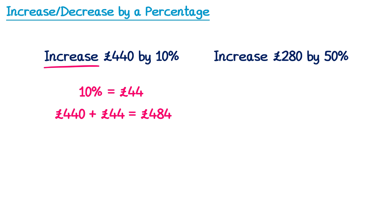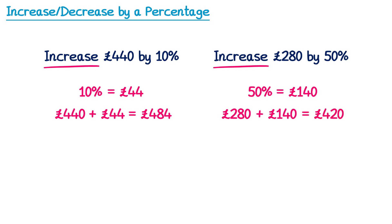Let's try a second example. Increase £280 by 50%. Our first job is to find 50%. We know we can find 50% of something by dividing it by 2, so 280 divided by 2 is 140. Now because it says increase, we're going to add this on. So £280 plus the 50%, which is £140, gives a total of £420.